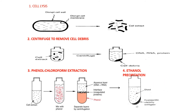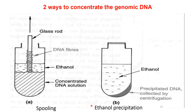There are two ways to concentrate genomic DNA: spooling and ethanol precipitation. In spooling, ethanol is added to the concentrated DNA solution, then a glass rod is inserted and rotated so that the DNA forms a fiber-like structure attaching to the rod. In ethanol precipitation, ethanol is added to the DNA and centrifugation is done so the precipitated DNA settles down at the bottom of the centrifuge tube.